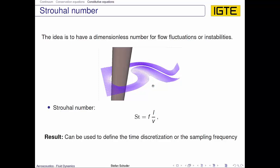Furthermore, there is a result that we can use for measuring and simulating flow. Based on this, if we know the Strouhal number has a certain value and we would like to resolve a certain Strouhal number, then we can come up with a time discretization, or if we do measurements, we can come up with a sampling frequency that is required to measure this flow state.